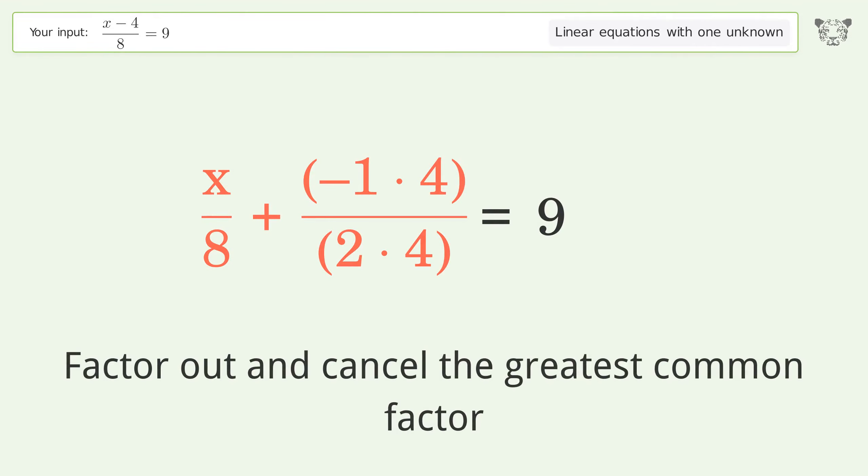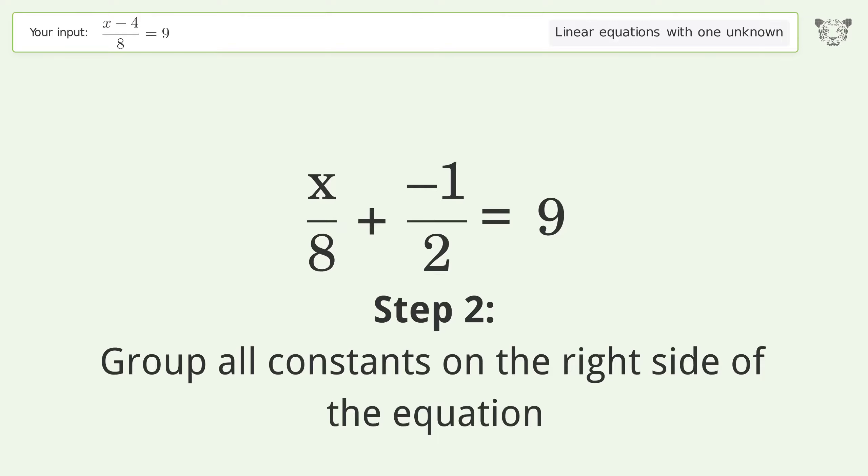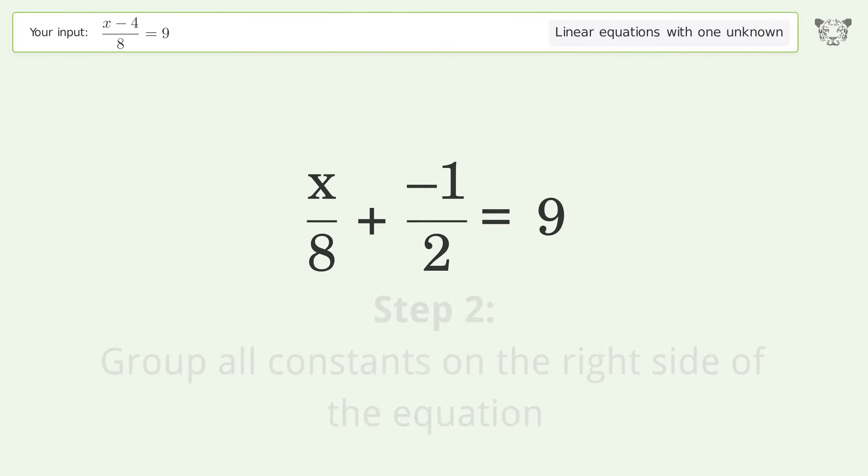Factor out and cancel the greatest common factor. Group all constants on the right side of the equation. Add 1 over 2 to both sides.